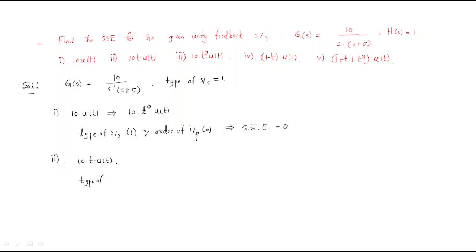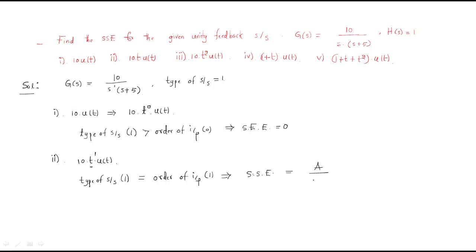For the second input, 10·t·u(t), the type of system is 1 and the order of input is also 1. Both are equal — this is a ramp signal — so we have a finite steady-state error.